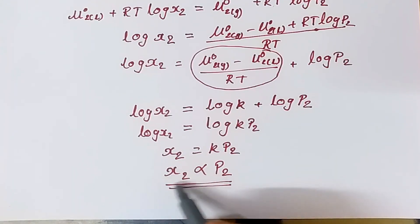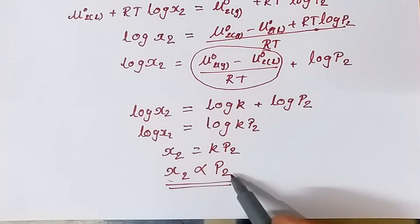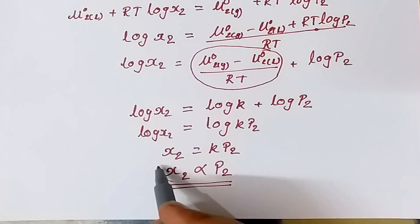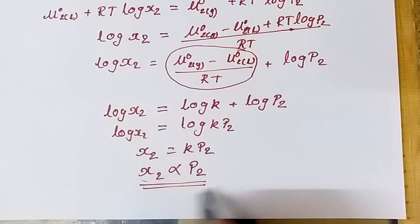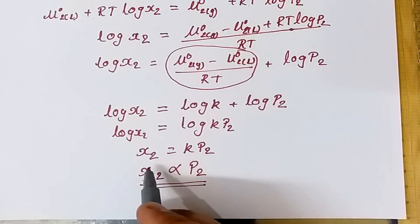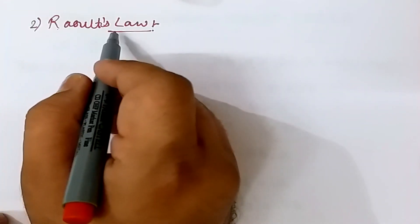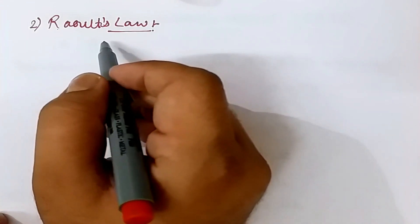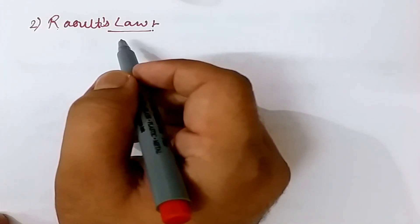Hence with the help of chemical potential we have proved Henry's law. This is one of the applications of chemical potential. Moving on to the next application: Raoult's law.